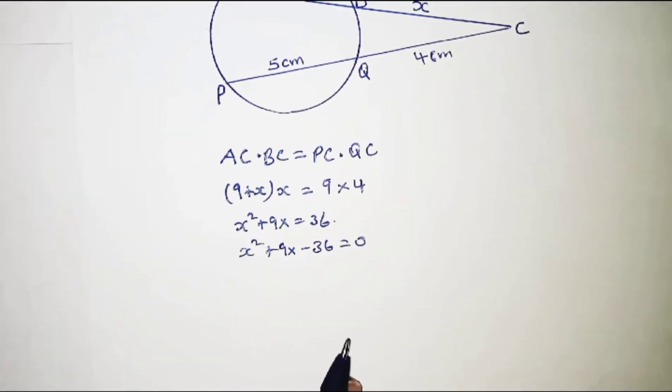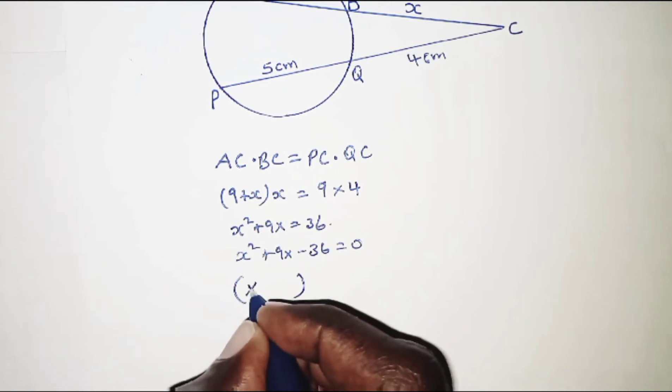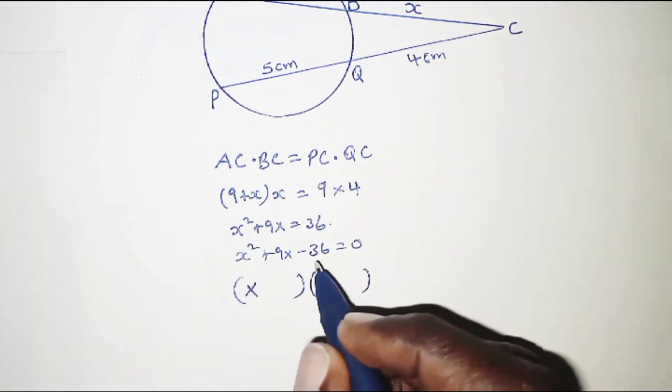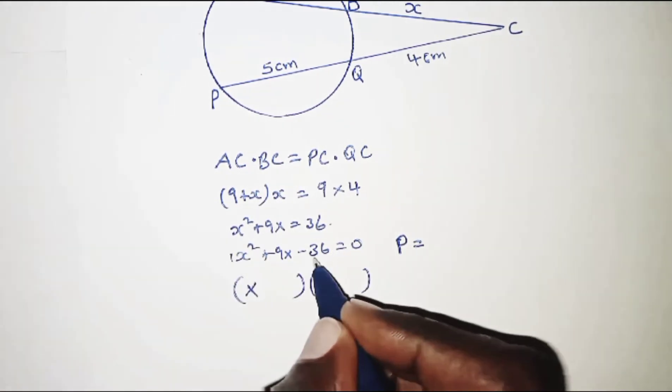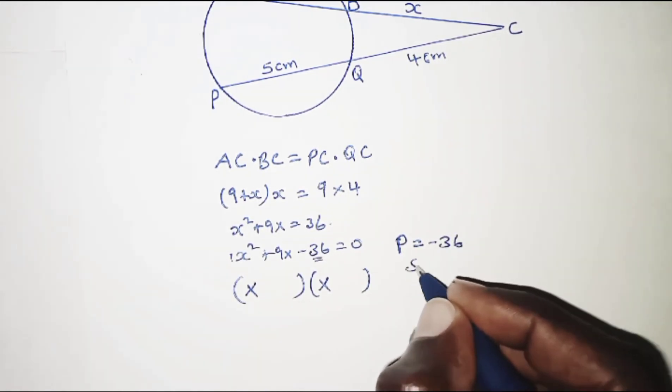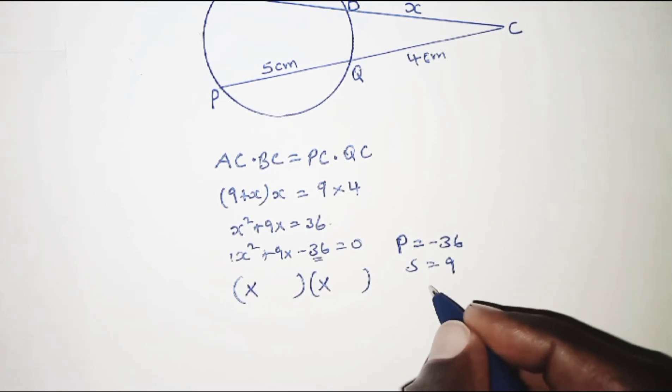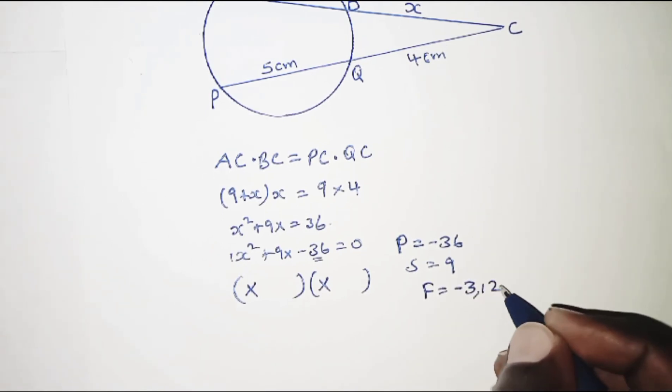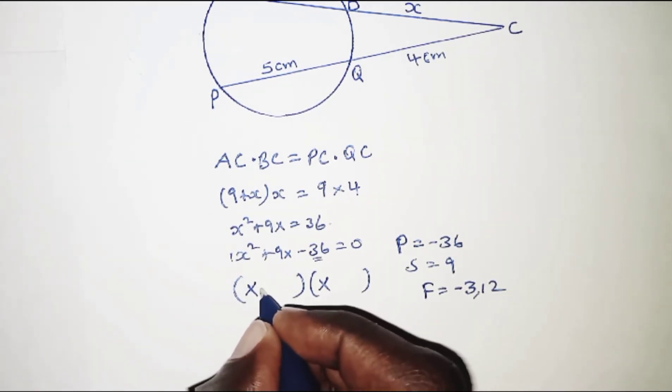To solve this, we factor by finding two numbers whose product equals the coefficient of x² times the constant term (1 × -36 = -36) and whose sum equals the coefficient of x, which is 9. The two factors are -3 and 12. Inserting these in the brackets, we get (x - 3)(x + 12) = 0.